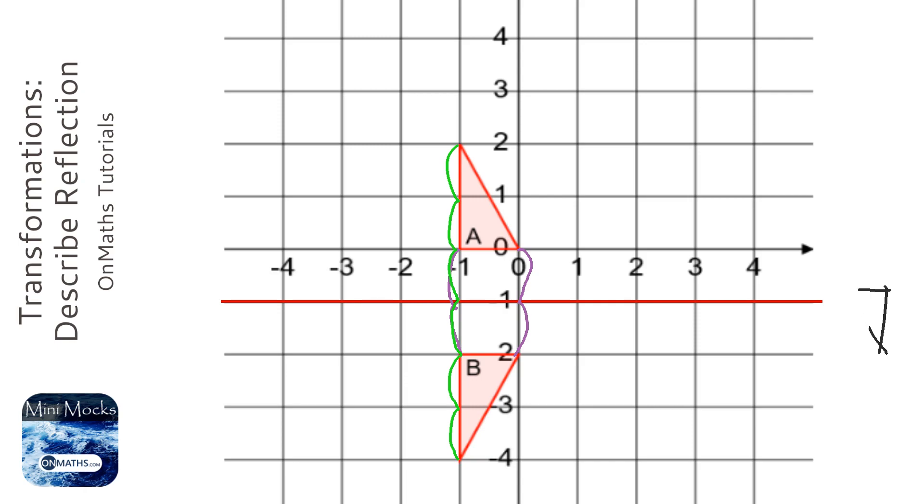However, it's not good enough just to draw the mirror line on. You have to write down what the equation of that mirror line is. So if I have a look at that mirror line, at every point on that line, x is continually changing.